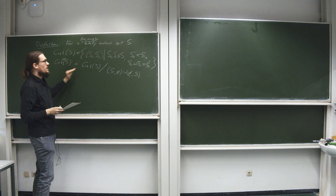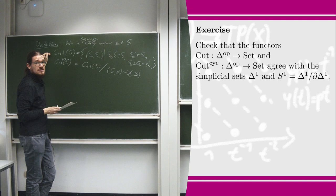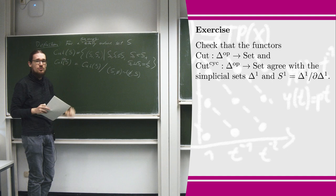To get a feeling for the combinatorics these two things capture, you should check for yourself that the first of these simplicial sets is really just a funny description for the simplicial set Δ¹, and this is simply a funny description for the simplicial S¹, which is obtained from Δ¹ by quotienting by its boundary.